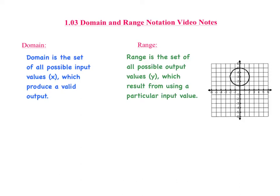Because domain is the set of all x values, on a graph it follows the x-axis and goes from the left to the right. Whereas the range, being the set of all possible y values, starts at the bottom of the y-axis and moves upwards.